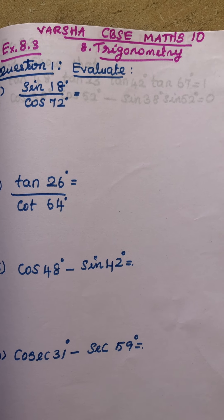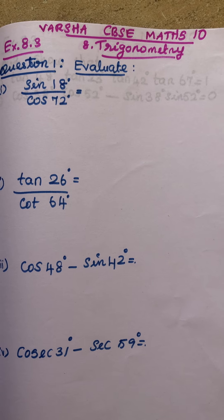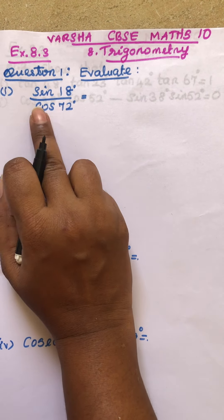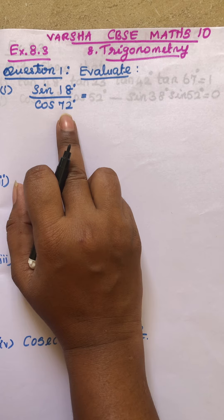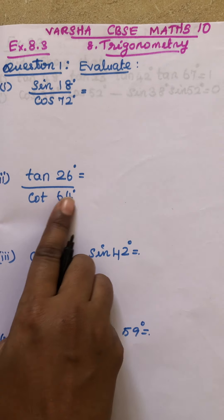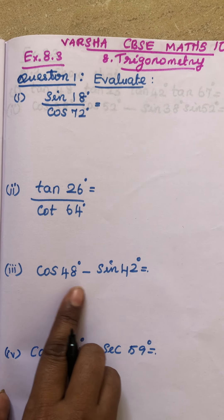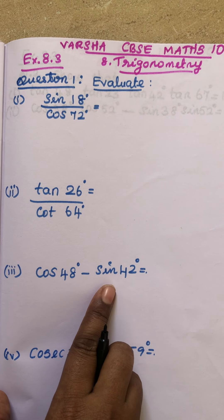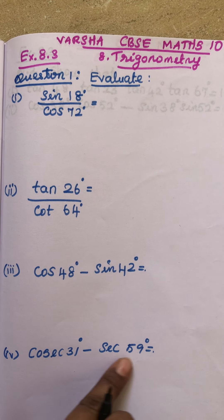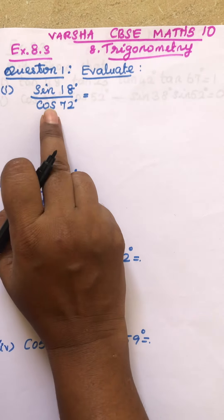We are going to do the first question in Exercise 8.3. The first question is sin 18 by cos 72. The second is tan 26 by cos 64. Then cos 48 minus sin 42, and cosecant 31 minus secant 59.